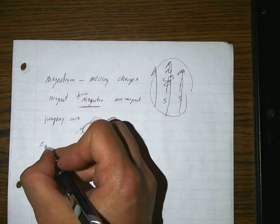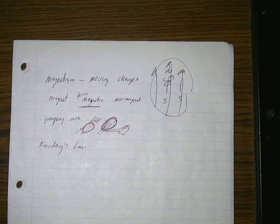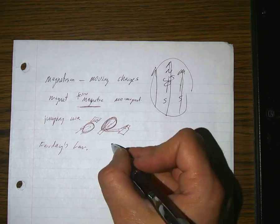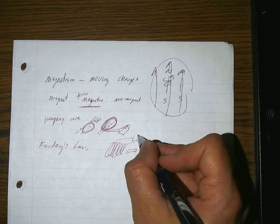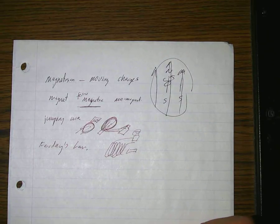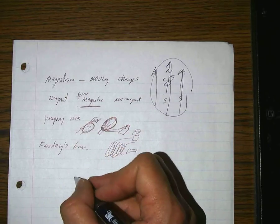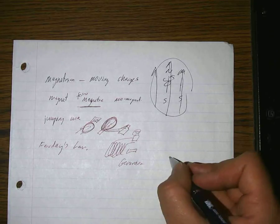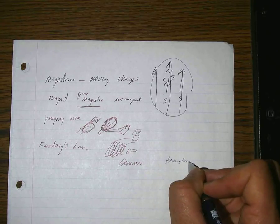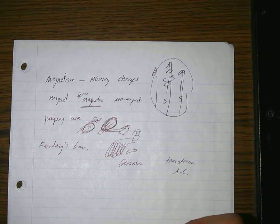We then talked about Faraday's Law: take a coil of wire, move a magnet next to it, and you can light up a light bulb without having a battery. That's the idea of a generator — move a coil of wire next to a magnet. A transformer steps up or steps down the voltage, but you have to use alternating current to do that, and the trade-off is it steps up or down the current in the opposite direction.